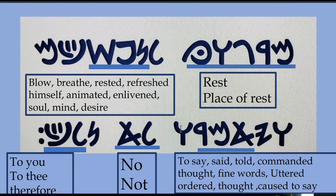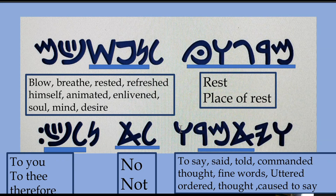The last few words in that verse: Mem-Resh-Gimel-Waw-Ayin is defined as rest or place of rest. The next word, Nun-Pay-Shin — dropping the Lamed prefix and Kof-Mem suffix (which is usually plural) — is defined as blow, breathe, rested, refreshed himself, animated, enlivened, soul, mind, desire. The last line has Aleph-Mem-Resh: to say, said, told, commanded, thought, fine words, uttered, ordered, cause to say. Lamed-Aleph is no, not. And Lamed-Kof is to you, to thee, or therefore.